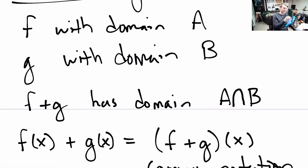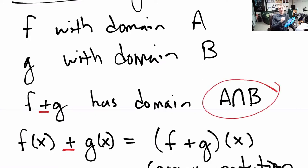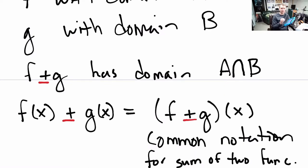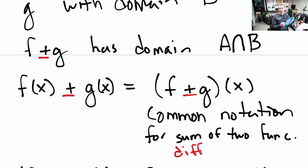Next is subtraction. F minus g has the same domain — that should make sense. We evaluate both f and g at some input, so that input needs to be allowed for both, giving us the exact same intersection of the two domains. The common notation replaces the plus sign with a minus sign. This is also common notation for the difference of two functions.